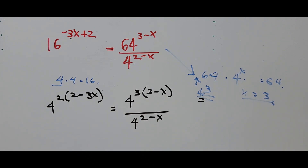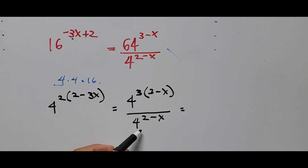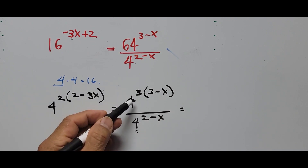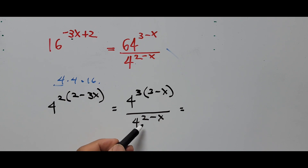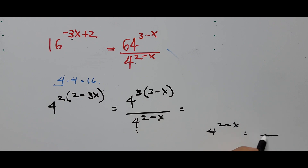Since the denominator has the same base 4, we can move it to the numerator by changing the sign of its exponent. So 4 raised to 2 minus x in the denominator becomes 4 raised to negative (2 minus x), which equals 4 raised to x minus 2, when moved to the numerator.